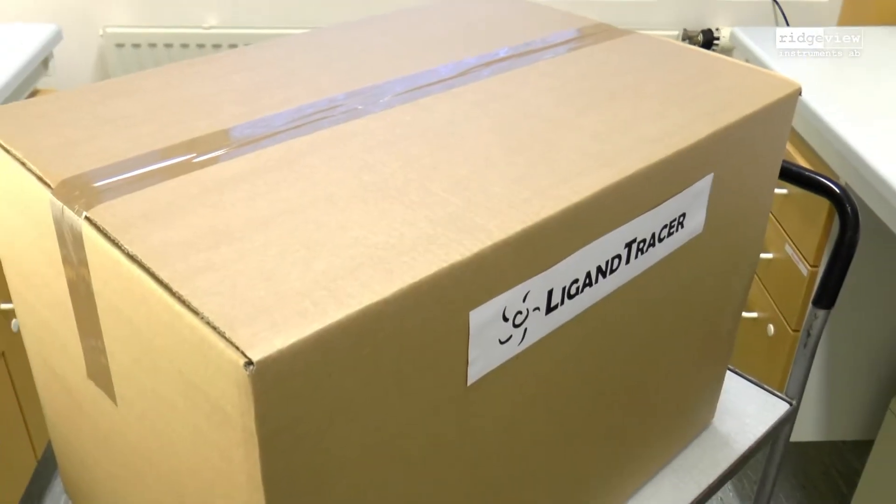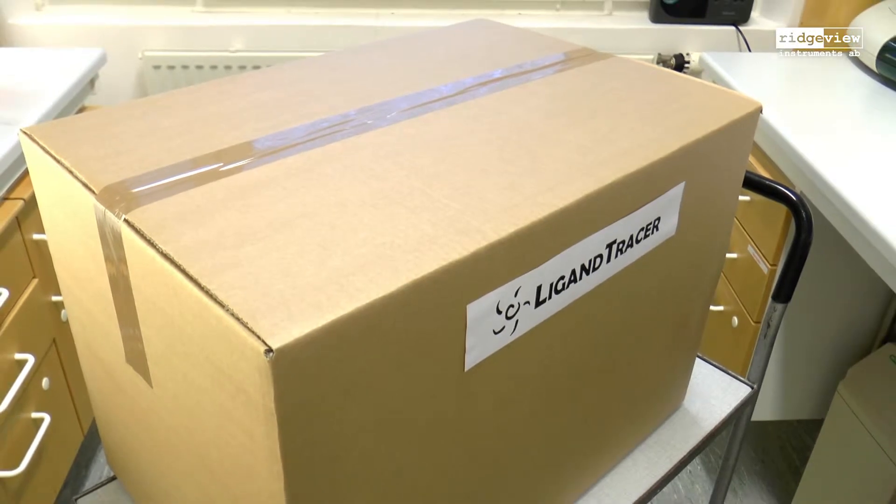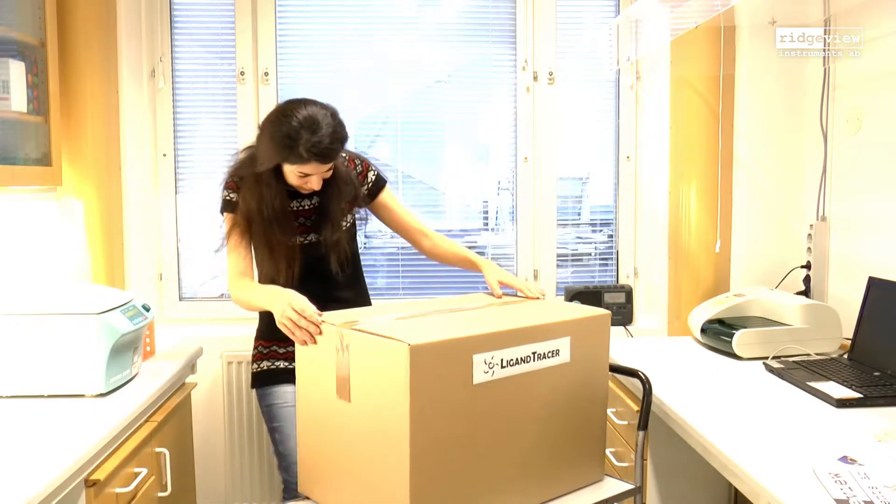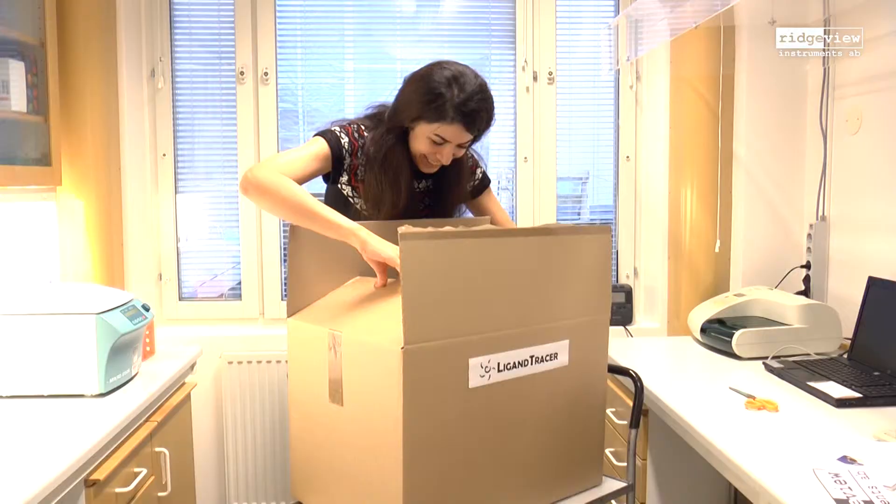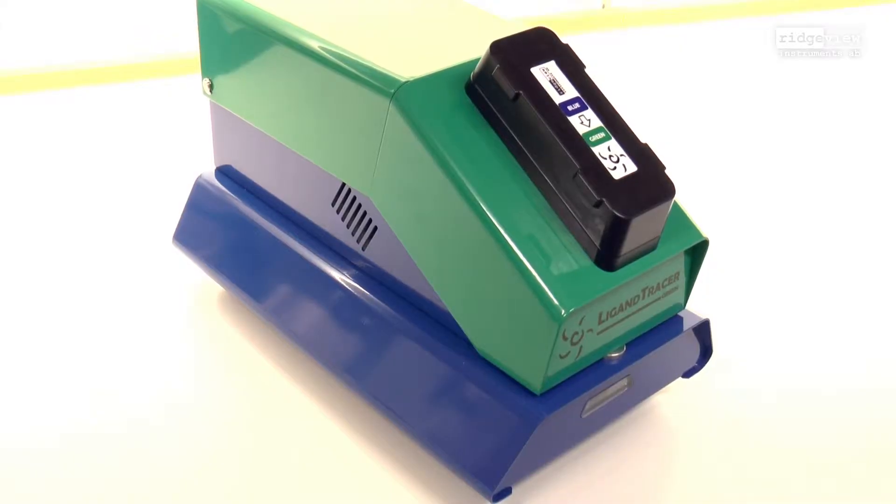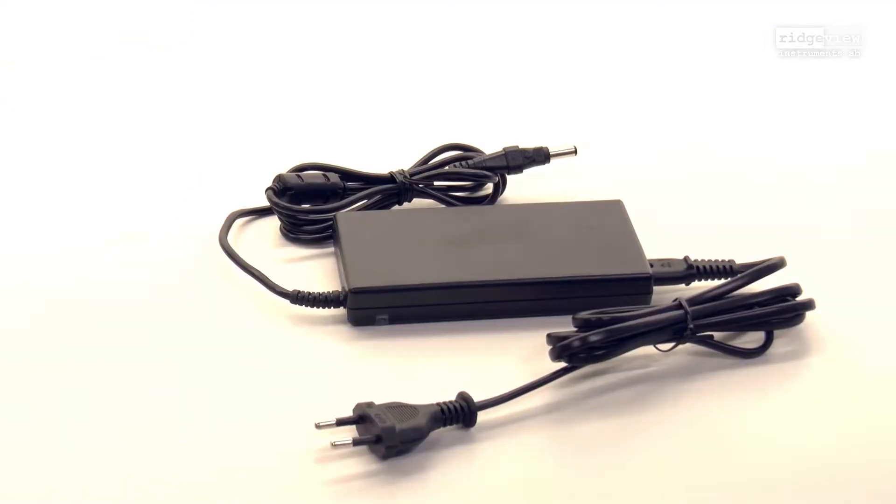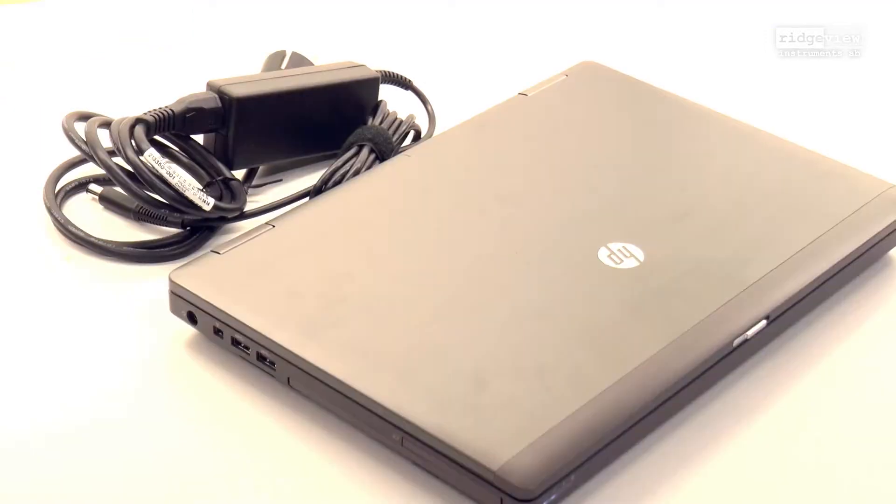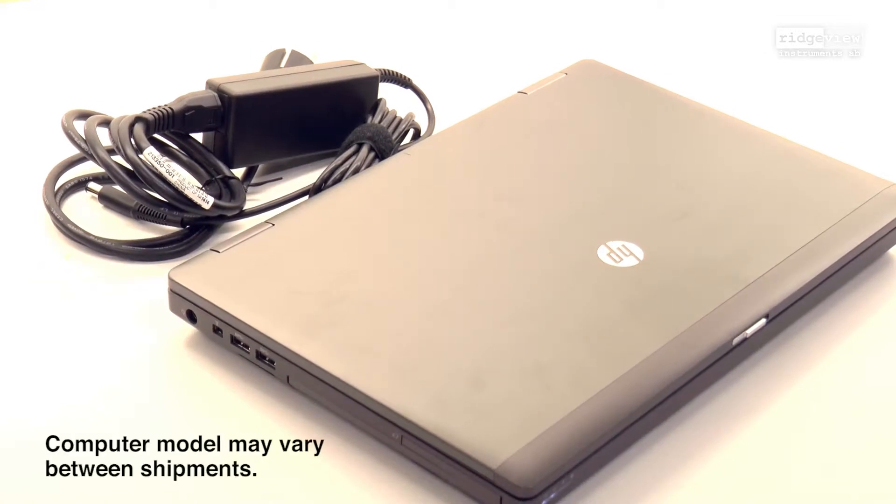A package has been delivered to you and it contains a LigandTracer. Don't worry, this short instruction video will help you to set up your LigandTracer system in just a few minutes. Your package includes all the essentials for running LigandTracer: the instrument itself, a power cable to the instrument, a PC laptop including its power connector, a USB cable, and a manual.